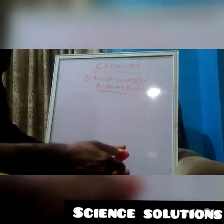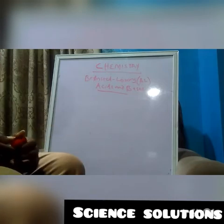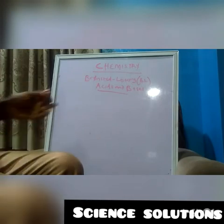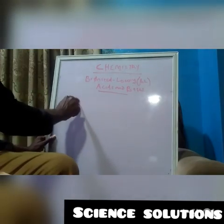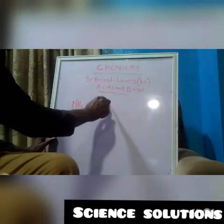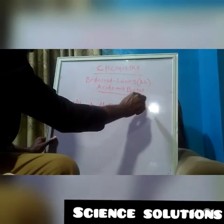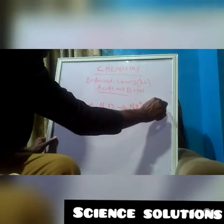So we take yet another example of a BL acid and base. Initially we saw hydrogen chloride behaving as an acid in donating hydrogen in the previous example and water there behaving as a base accepting the hydrogen ion from hydrogen chloride to give you a hydronium ion. The second example goes like this. We take ammonia which is NH3 reacting with water gives us NH4 plus and OH minus.